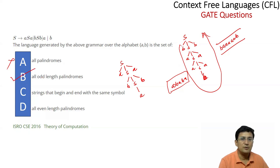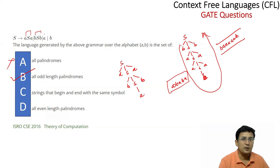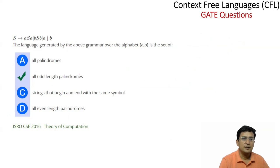This is all odd-length palindromes, because each expansion adds matching symbols on both sides. If a string starts with A, it ends with A; if it starts with B, it ends with B. Even-length palindromes cannot be generated. So the correct answer is: all odd-length palindromes over the alphabet.